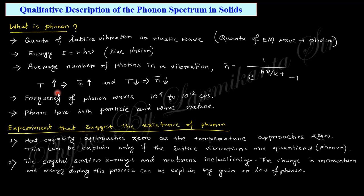The frequency of the phonon wave ranges from 10^4 to 10^12 cycles per second, which is a wide range. For comparison, electromagnetic waves range from 0 to infinity — essentially from DC signals up. Phonons, like photons, have both particle and wave nature, as discussed. Two experimental results actually confirm the existence of phonons. Number one: heat capacity approaches zero as temperature approaches zero.